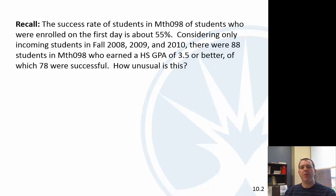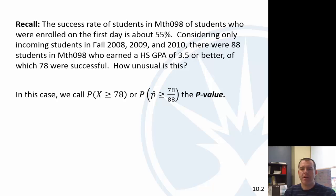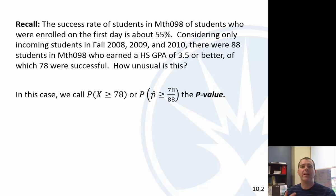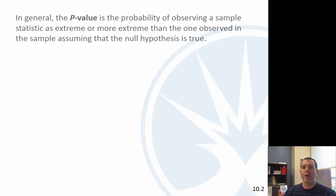We have this example where we look at the success of students in Math 98 — about 55% were successful — and we're wondering how unusual that is. If we look at the probability of having 78 or more successful students, or a proportion of at least 78 out of 88, we call that the p-value. The p-value is hypothesis test language for how likely it is to observe your result or something more extreme.